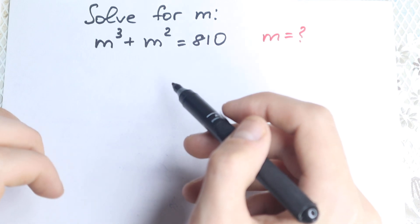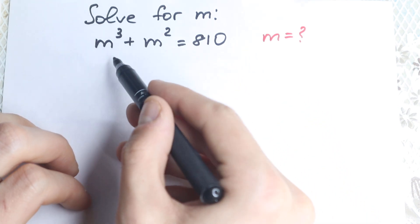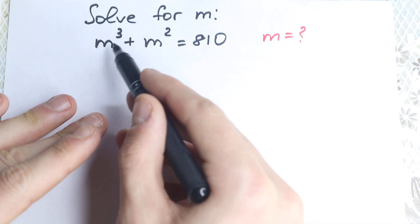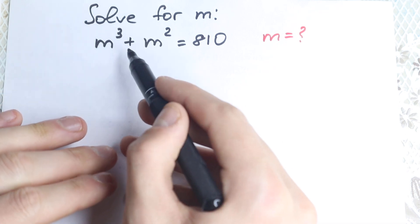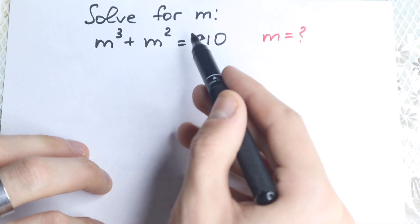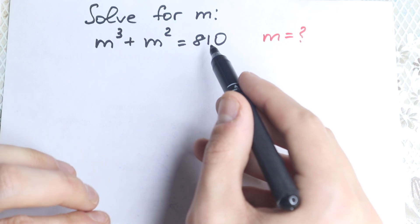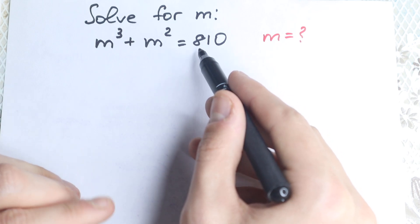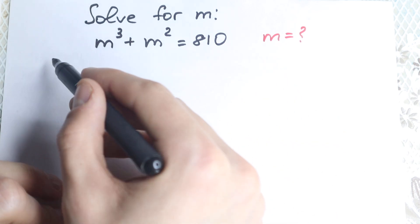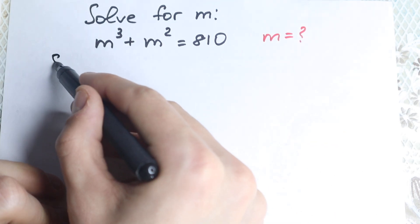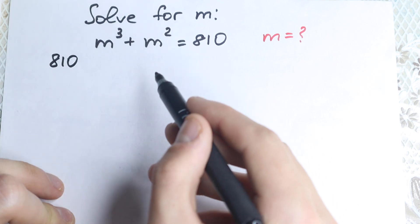A lot of students try to factor, try to think about m cubed and m squared on the left-hand side. But what about the right-hand side? We have 810, and I'm going to start with this 810. So take a look — what can you tell about this number?